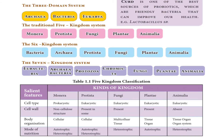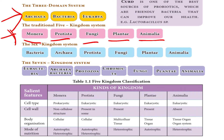Various classification systems have been proposed. The three-domain system: Archaea, Bacteria, and Eukaryote. The five-kingdom classification given by Whittaker: Monera, Protista, Fungi, Plantae, and Animalia. The six-kingdom system: Bacteria, Archaea, Protista, Fungi, Plantae, and Animalia.